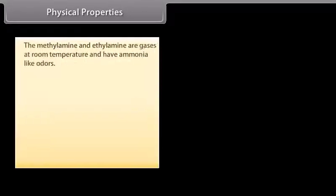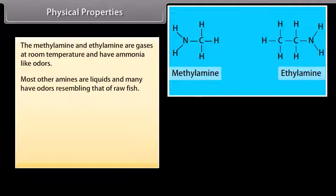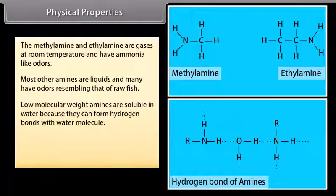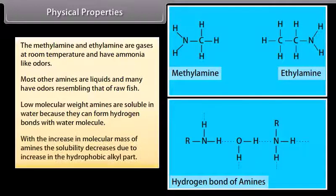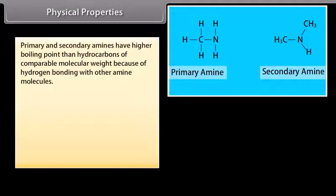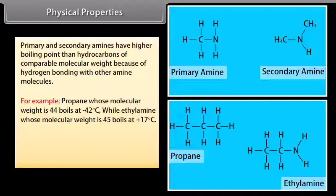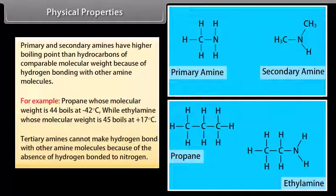Physical properties: Methylamine and ethylamine are gases at room temperature and have ammonia-like odours. Most other amines are liquids and many have odours resembling that of raw fish. Low molecular weight amines are soluble in water because they can form hydrogen bonds with water molecules. With increasing molecular mass, solubility decreases due to increase in the hydrophobic alkyl part. Primary and secondary amines have higher boiling points than hydrocarbons of comparable molecular weight because of hydrogen bonding. For example, propane (MW 44) boils at −42°C, while ethylamine (MW 45) boils at +17°C. Tertiary amines cannot form hydrogen bonds with other amine molecules due to the absence of hydrogen bonded to nitrogen.